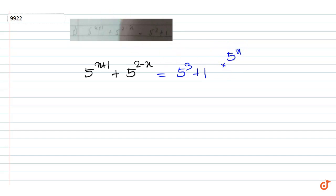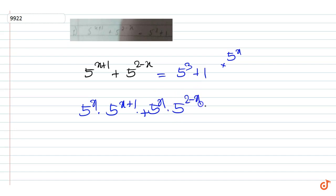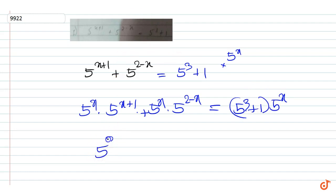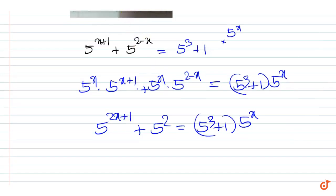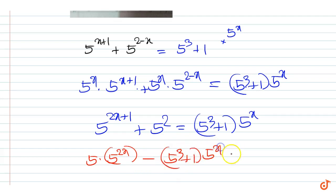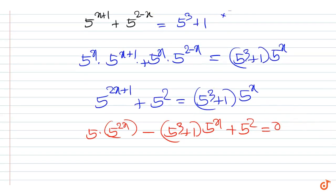Multiplying throughout by 5 to the power x, we get 5 to the power x times 5 to the power x plus 1, plus 5 to the power x times 5 to the power 2 minus x, equal to 5 cubed plus 1 times 5 to the power x. That is 5 to the power 2x plus 1, plus 5 squared, equal to 5 cubed plus 1 times 5 to the power x. Rearranging, we get 5 times 5 to the power 2x, minus 5 cubed plus 1 times 5 to the power x, plus 5 squared equals 0.